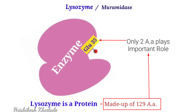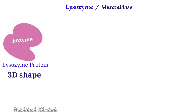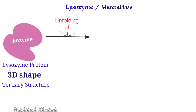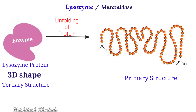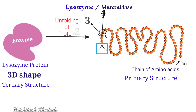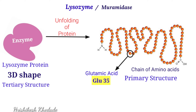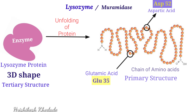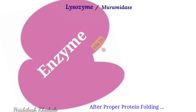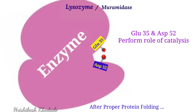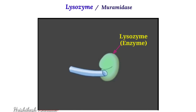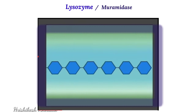Out of 129 amino acids, only two perform the important role: glutamic acid 35 and aspartic acid 52. Lysozyme has a 3D tertiary structure, and after unfolding we get a primary structure — a chain of amino acids. Counting from the N-terminus, at the 35th position we find glutamic acid, and at position 52 we find aspartic acid. After proper protein folding, these amino acids come to the perfect location of the active site, which is designed to accommodate three pairs of NAG-NAM units.